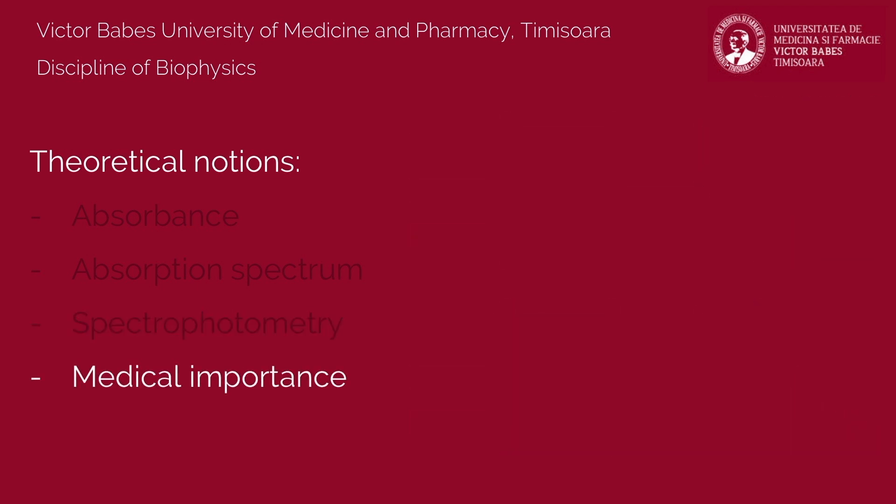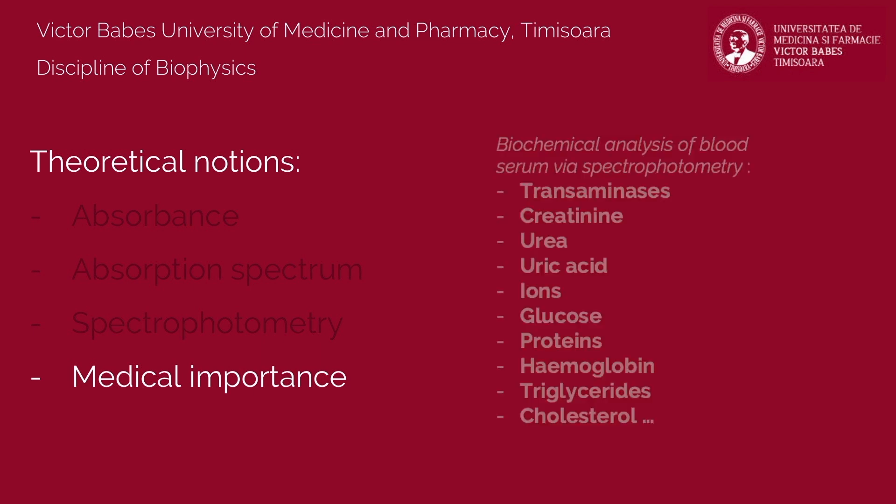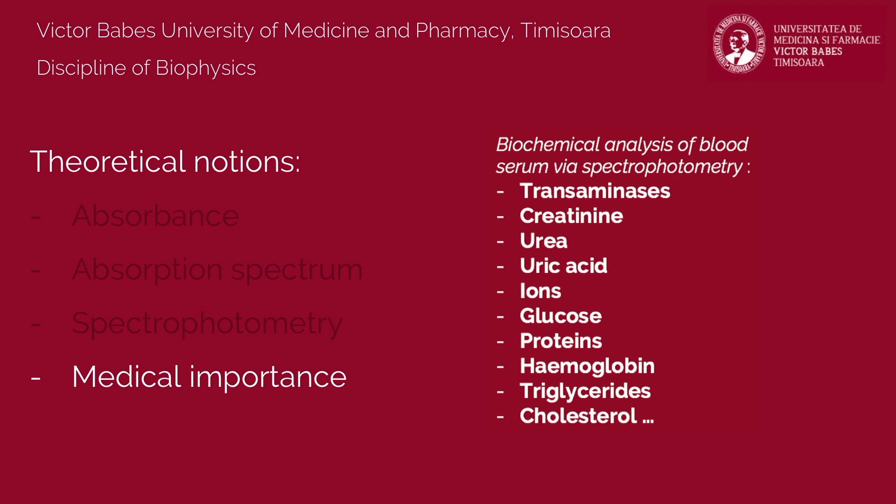The spectrophotometry method is widely used in medicine to identify clinical compounds and measure their concentration, to measure the speed of some biochemical reactions, and many others. Using this method, multiple biochemical compounds from human serums can be identified, such as transaminases, creatinine, urea, ions, glucose, protein, hemoglobin, and so on.